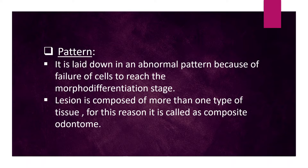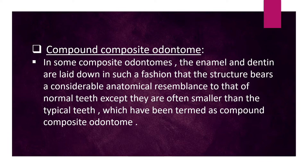The lesion is composed of more than one type of tissue; for this reason it is called a composite odontoma. In compound composite odontoma, the enamel and dentin are laid down in such a fashion that the structures bear considerable anatomical resemblance to normal teeth, except they are often smaller than typical teeth.